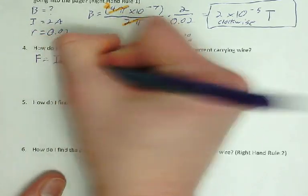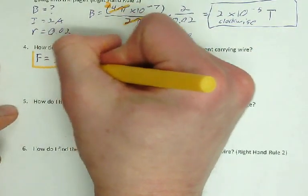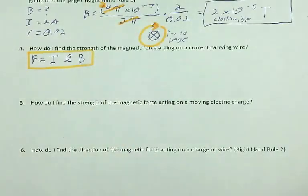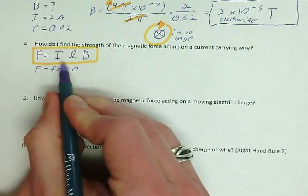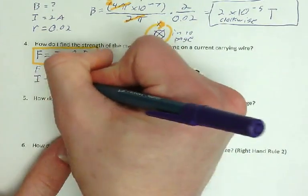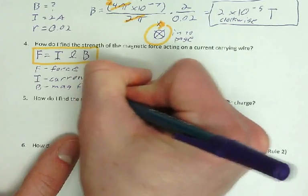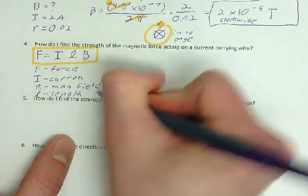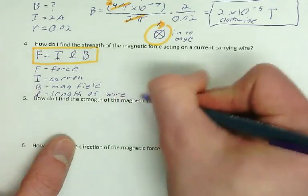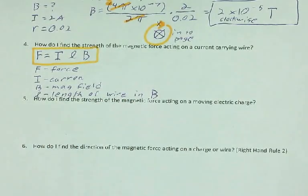F equals I L B. So F is force. Nothing weird there. I is still current. B is still magnetic field. And L is the length of wire in the field. And I'll just write in B because B is magnetic field. So it's the length of wire in the magnetic field. There you go. That's it.